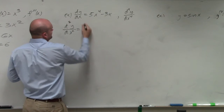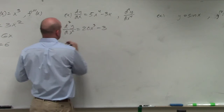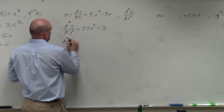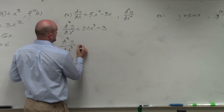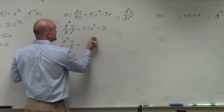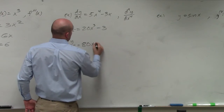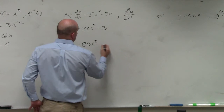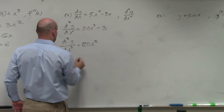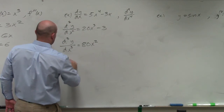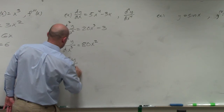So therefore, that's going to be 20x cubed minus 3. d cubed y over dx cubed is going to be equal to — that gets eliminated out — and d⁴y over dx⁴.